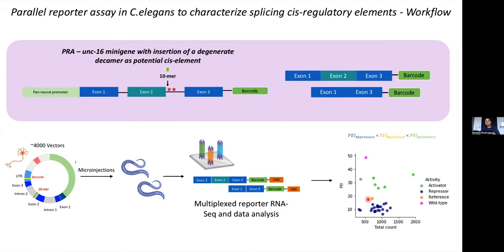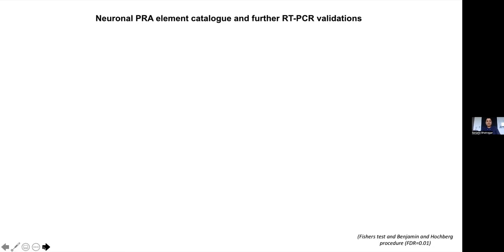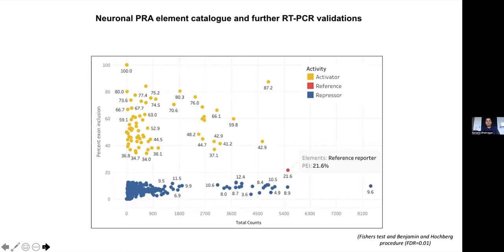I've been using the reference or mutant reporter as the control — it lacks any 10-mer. If splicing increases after introduction of the 10-mer, we call it an activator; if inclusion is further decreased, we call it a repressor. I've been able to identify approximately 477 pairs of these elements. The reference reporter shows only 21.6% splicing isoforms in the total population, whereas activators increase inclusion and repressors decrease it further.